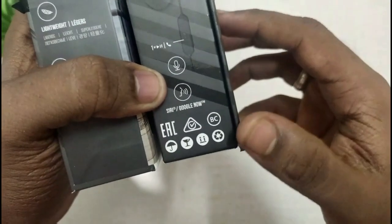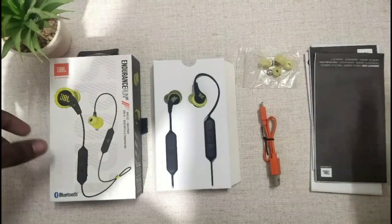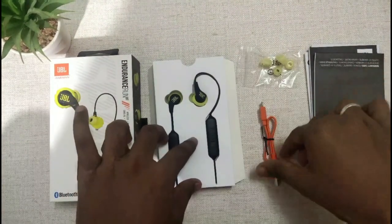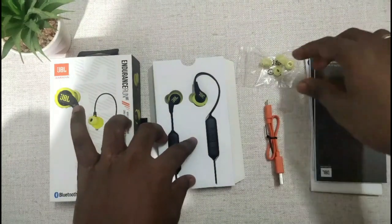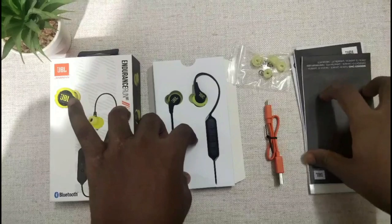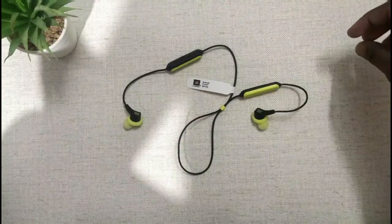The Bluetooth earphone box contains the JBL Bluetooth earphone, micro USB cable, pair of ear tips, and some booklet stuff. This is a Bluetooth wireless headset from the brand JBL. This is totally made of plastic material.